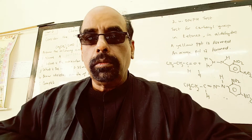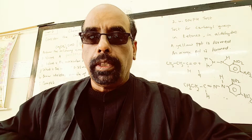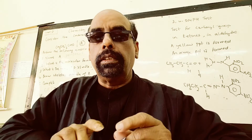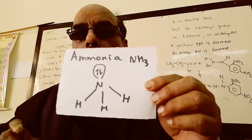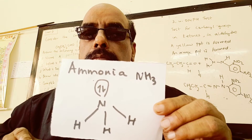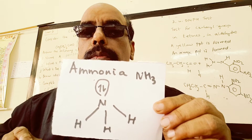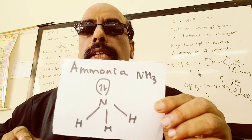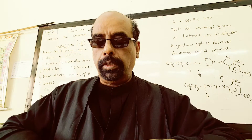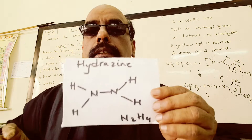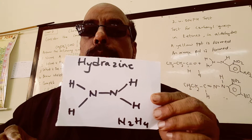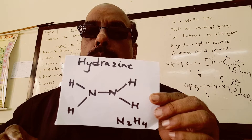To understand what 2,4-DNPH is, we first need to understand what ammonia is. Ammonia, NH3, has one nitrogen to which three hydrogen atoms are bonded. From this, we can understand the formula of hydrazine, N2H4.